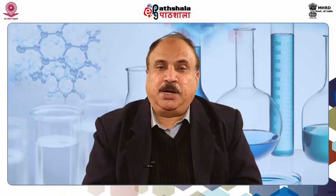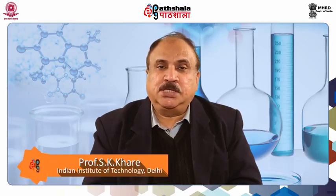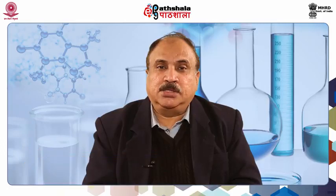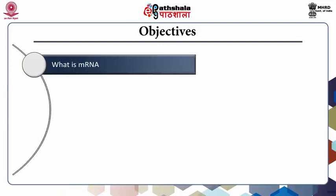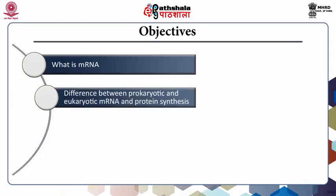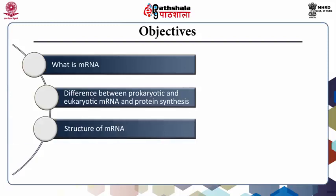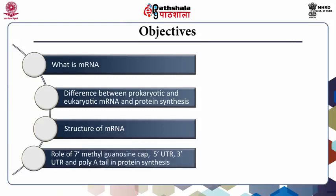The Shine-Dalgarno sequence binds to the complementary sequences in the 16S rRNA subunit of the ribosome. The objective of this lesson is to understand what is mRNA or messenger RNA. We will also learn the difference between prokaryotic and eukaryotic mRNA and protein synthesis, and look into the structure of mRNA and the role of 7-methylguanosine cap, 5-prime UTR, 3-prime UTR, and poly-A tail in protein synthesis.